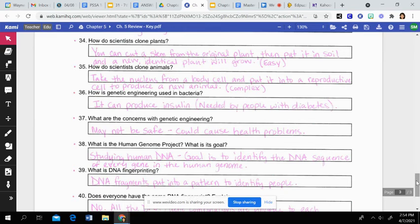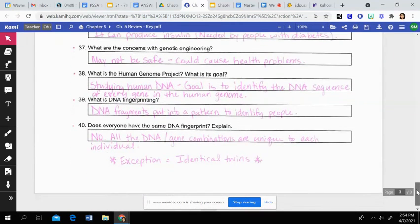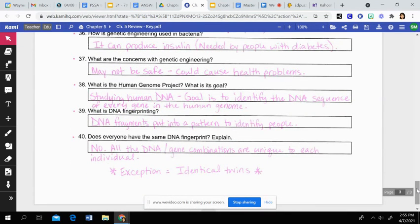Then some concerns that we have with genetic engineering are that it may not be safe, or it could cause health problems down the road that we don't know of because we're trying to change the DNA and structure of different organisms. The Human Genome Project is studying the human DNA and how it's structured. And the goal of it is to identify the DNA sequence of every gene that is in the human genome. So there are about 30,000 genes in the human body. So that is a very large, complex, detailed task.